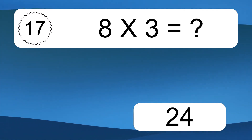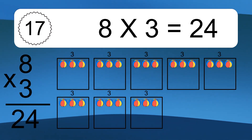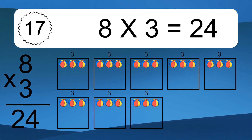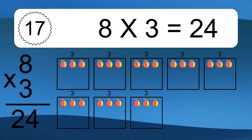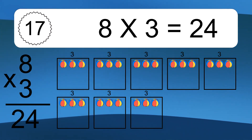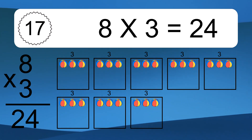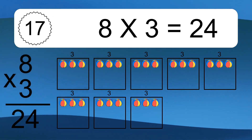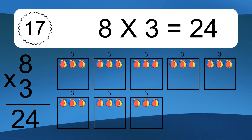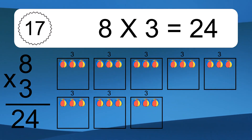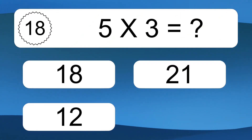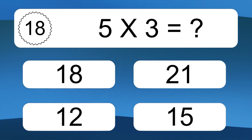8 times 3 equals what? 8 times 3 equals 24. We have 8 boxes and each box has 3 colorful balls inside. If you count all the balls in all the boxes together, you will have 8 times 3 balls. This equals 24 balls.